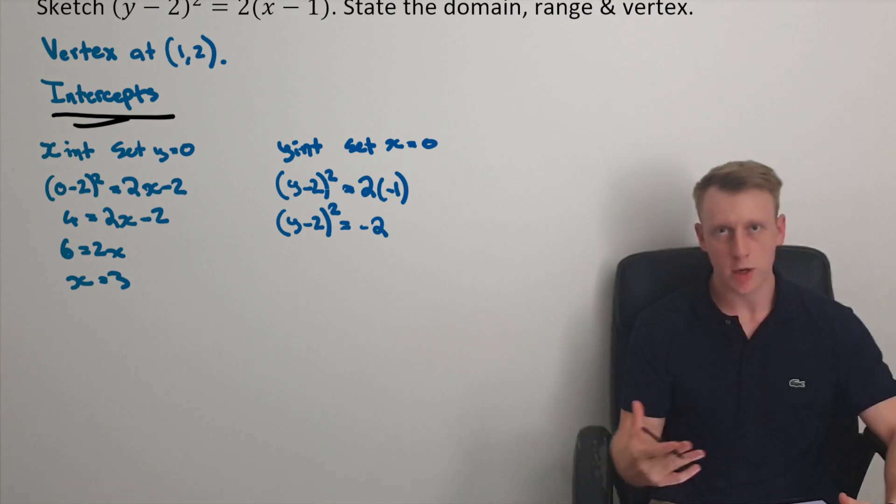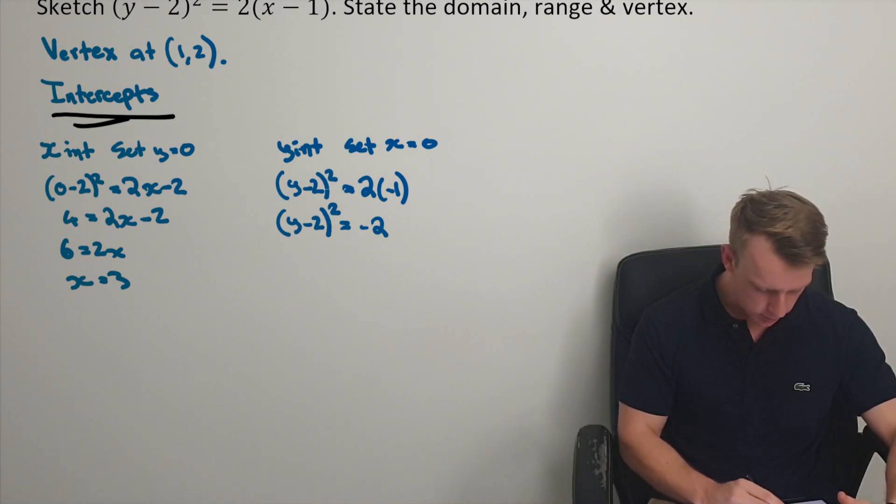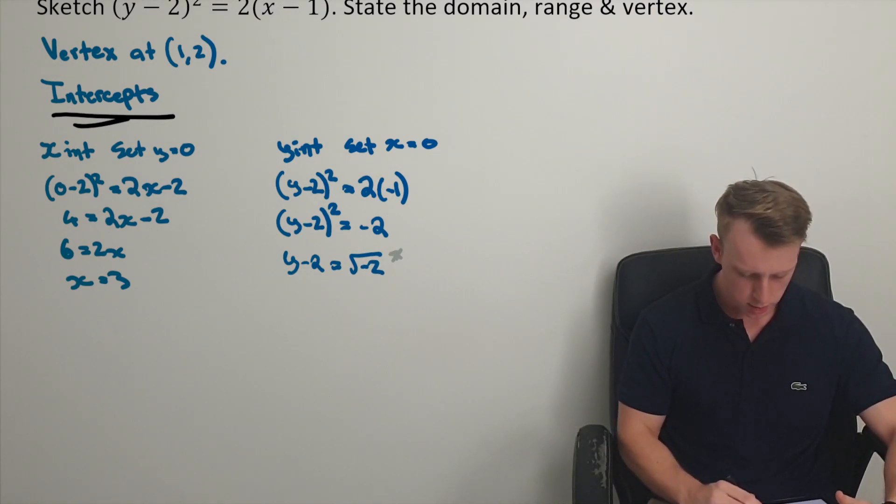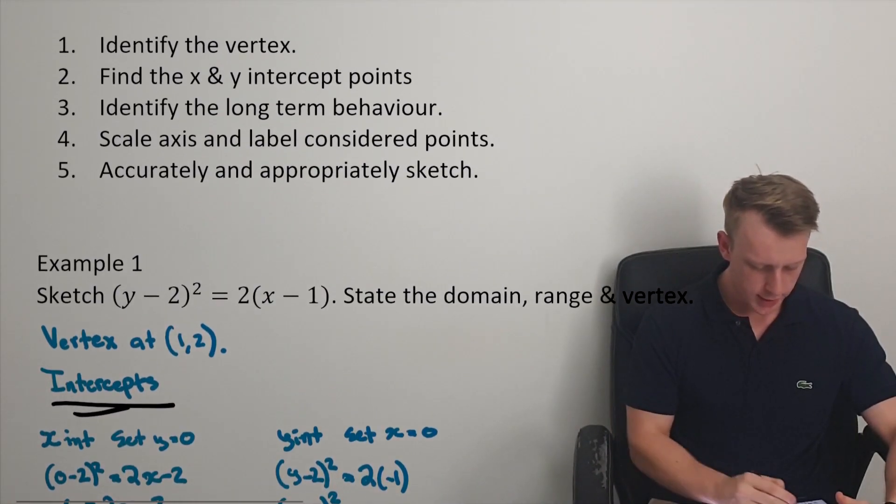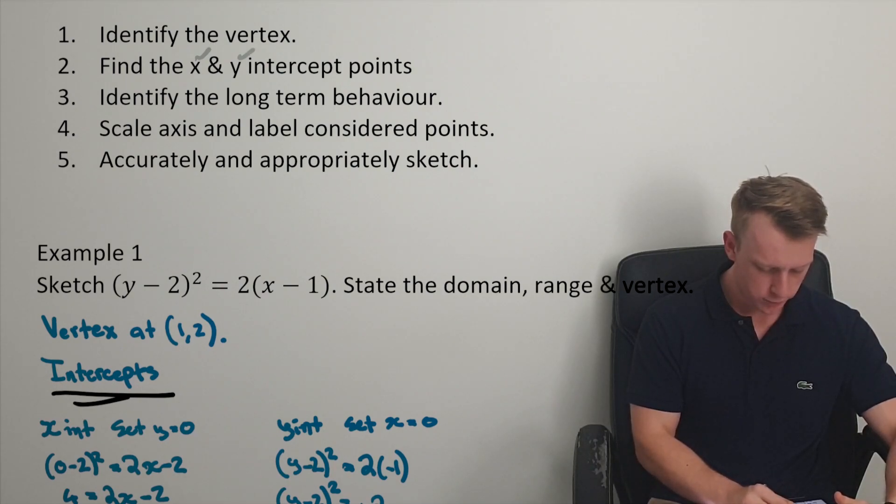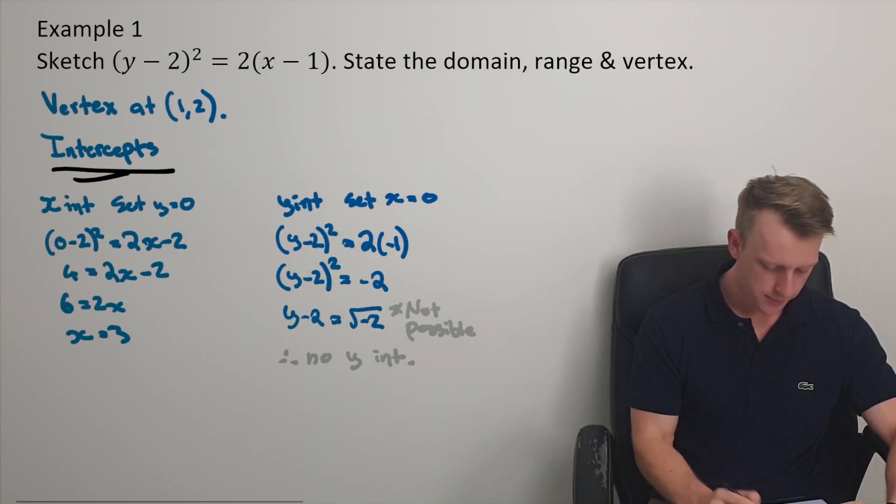We'd have to square root both sides to get rid of that squared. So we'd have y minus 2 is equal to the square root of negative 2. Problem, not possible. Therefore, no y-intercepts. So we've got our x and y-intercepts. We've found our vertex a point there.